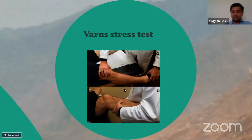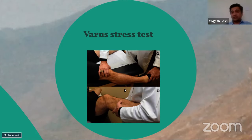The varus stress test is done at zero degrees and 30 degrees of flexion. You hold the femur and ankle and apply a varus stress, feeling for opening of the joint line on the lateral side. If there is no endpoint, it's grade three; if there is an endpoint with slight opening, it's grade two; if there is just pain and bruising with no opening, it's grade one. The most important part is to compare with the contralateral side, as some patients have physiological laxity of the posterolateral corner.